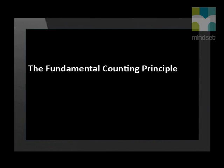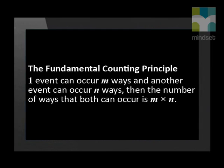The fundamental counting principle states that if one event can occur m ways and another event can occur n ways, then the number of ways that both can occur is m times n.